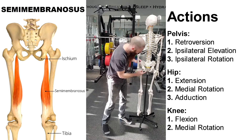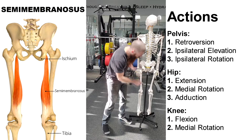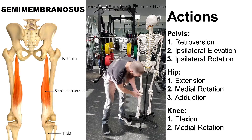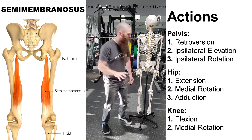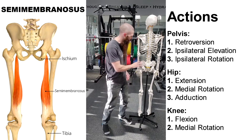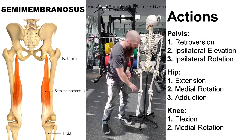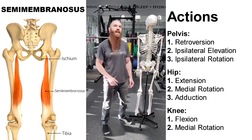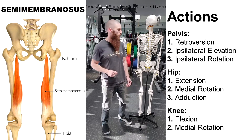The semimembranosus attaches from the ischial tuberosity to the posterior surface of the medial condyle of the tibia. Because it crosses the pelvis, the femur, and the knee, we know it's going to have actions in all three of those areas.